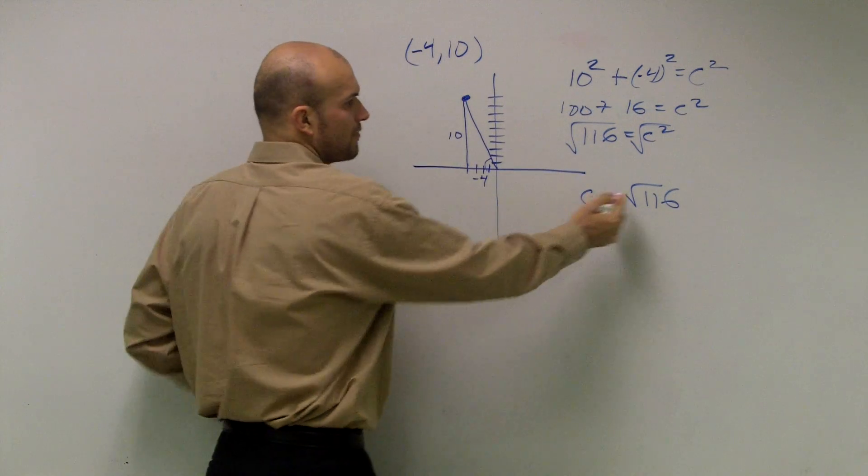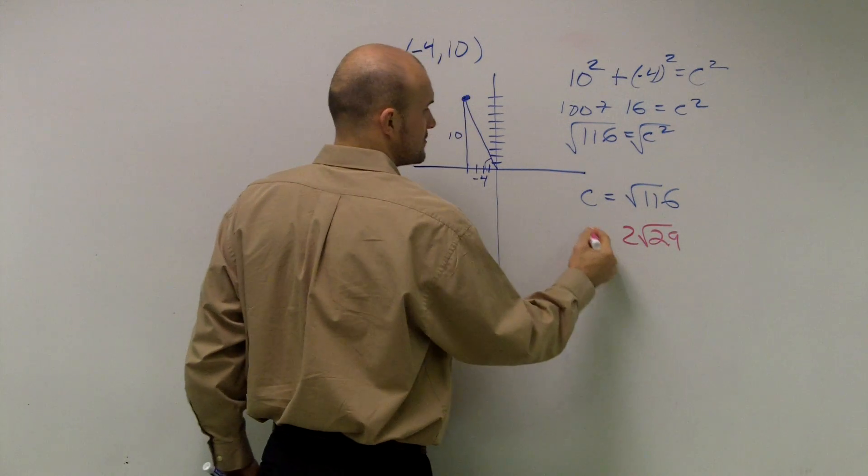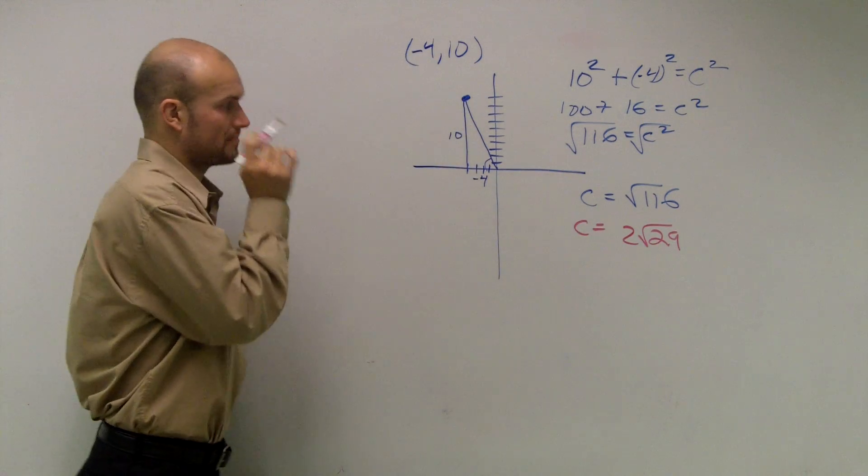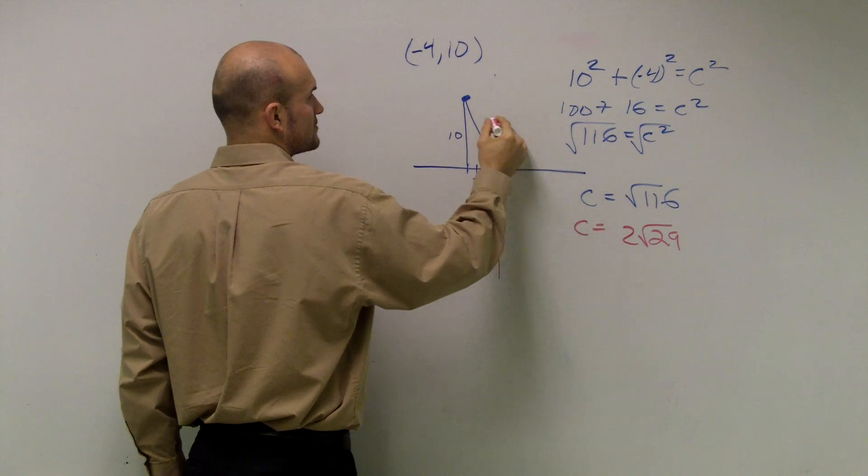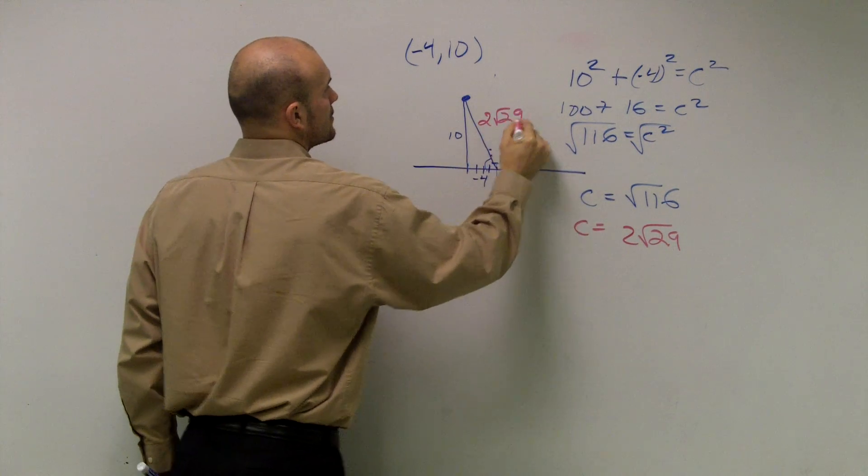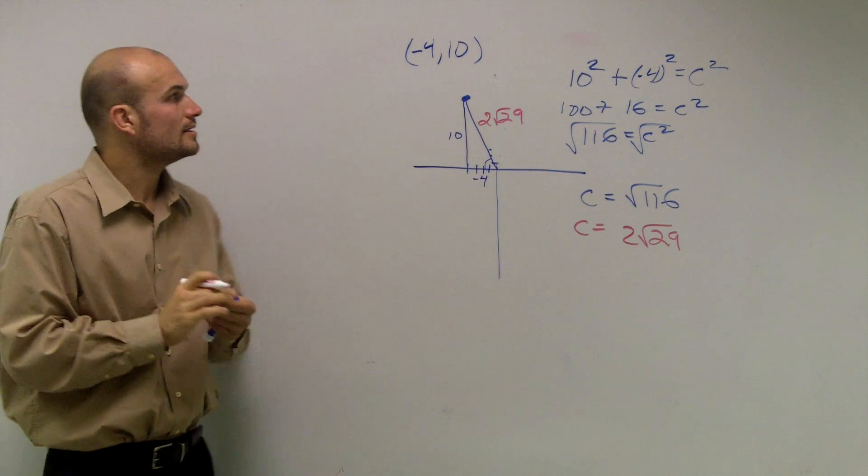So I can take out the square root of 4. Square root of 4 would be 2, radical 29. So now, if I have my triangle, 2 times radical square root of 29.